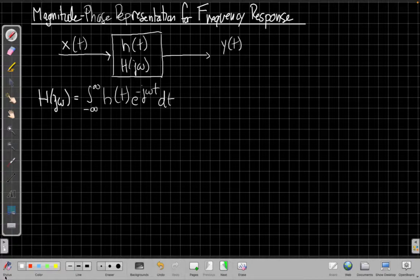But it turns out if we want to interpret how a system is going to affect a signal at a particular frequency, it's easier not to think about the real and imaginary part, but instead to think about the polar form of h of j omega, that is to write h of j omega in terms of its magnitude and phase.